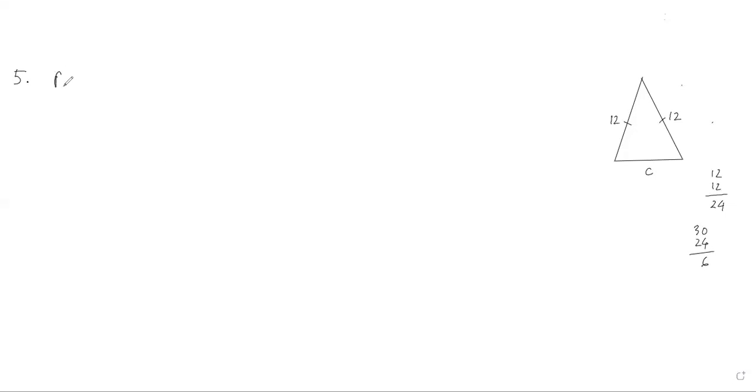Question number five. Perimeter is 30 centimeters. A equals 12 centimeters. B equals 12 centimeters. And C, we don't know.